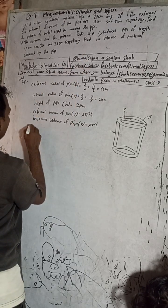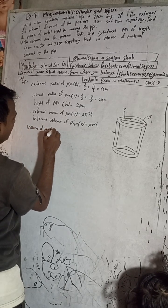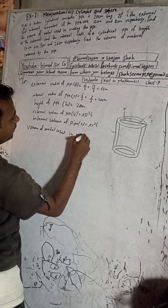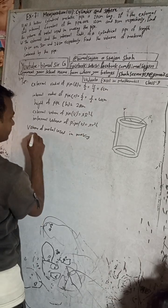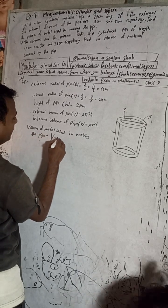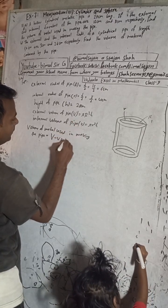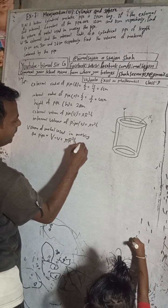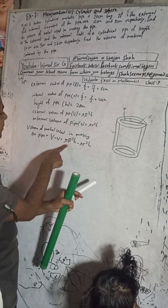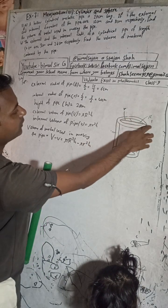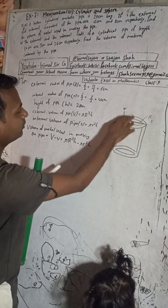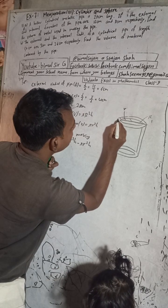Therefore, the volume of metal used in making the pipe is equal to capital V minus small v, which means pi R squared h minus pi r squared h. When we subtract the small internal volume from the big external volume, we get only the material part — that ring-shaped solid region.